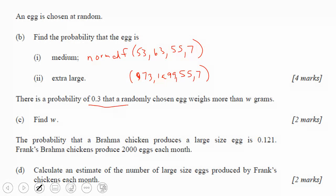So there's a probability of 0.3 that a randomly chosen egg weighs more than W pounds. So that is an inverse norm question. They're telling us the probability. So if we put our mean on here, and W would be something out here, and that means the area right here is 0.3.